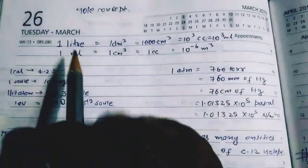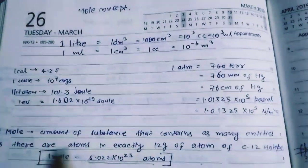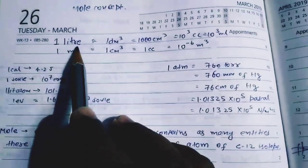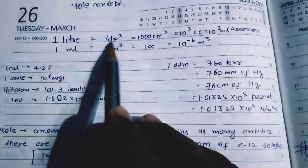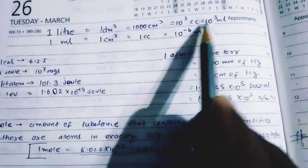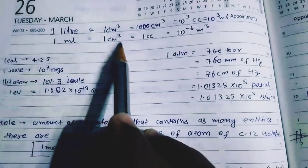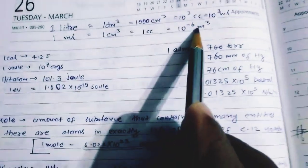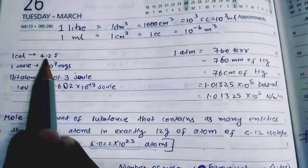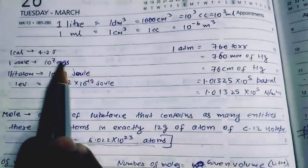Before starting the chapter we have to focus on some bullet points. One liter is equal to one decimeter cube, and one decimeter cube is equal to one thousand centimeter cube, which is equal to one thousand ml. One ml is equal to one centimeter cube. One centimeter cube is equal to 10 to the power minus 6 meter cube. One calorie is equal to 4.2 joules, and one joule is equal to 10 to the power 7 erg.